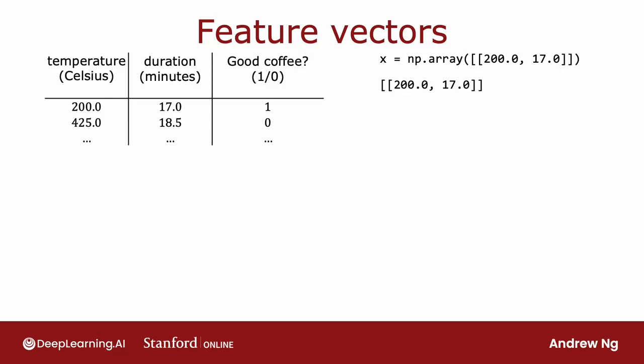Let's start by taking a look at how TensorFlow represents data. Let's say you have a dataset like this from the coffee example. I mentioned that you would write x as follows. So why do you have this double square bracket here? Let's take a look at how NumPy stores vectors and matrices. In case you think matrices and vectors are complicated mathematical concepts, don't worry about it. We'll go through a few concrete examples and you'll be able to do everything you need to do with matrices and vectors in order to implement your networks.